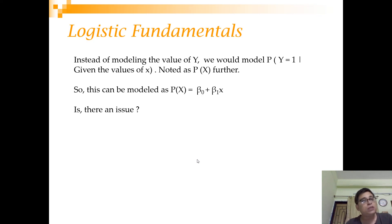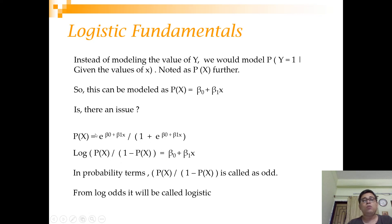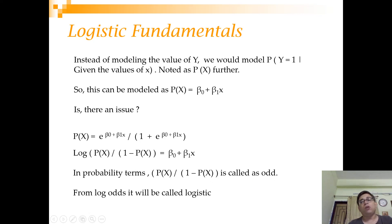Instead, we use the logistic function: p(x) equals e to the power (beta 0 + beta 1 x) divided by (1 + e to the power (beta 0 + beta 1 x)). Taking the log and rearranging, beta 0 + beta 1 x equals the log of p(x) divided by (1 minus p(x)). This is the log-odds — or logit — so logistic regression is essentially fitting a linear regression on the log-odds of the outcome.